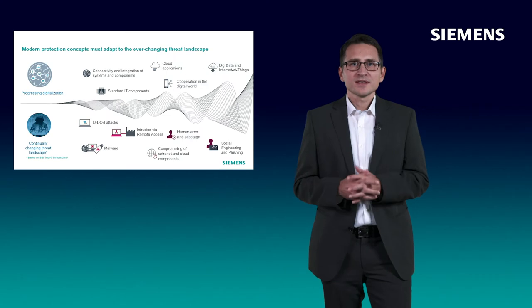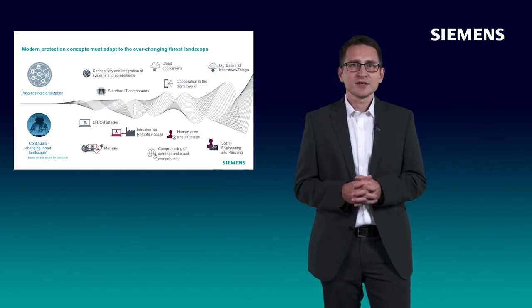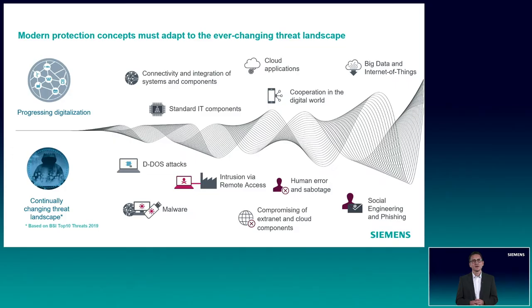We also must consider a continually changing threat landscape. These are some examples from the German BSI. For example, distributed denial-of-service attacks are used to overload systems and make them unusable. Malware can find its way into systems via USB keys or via the network, and we have even already seen targeted malware developed specifically for energy automation systems.